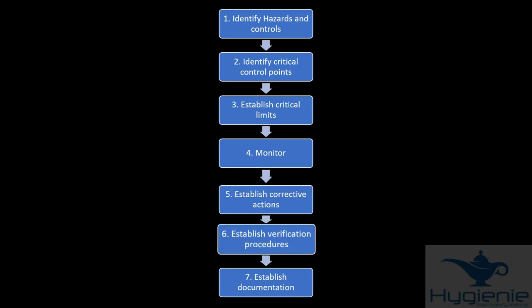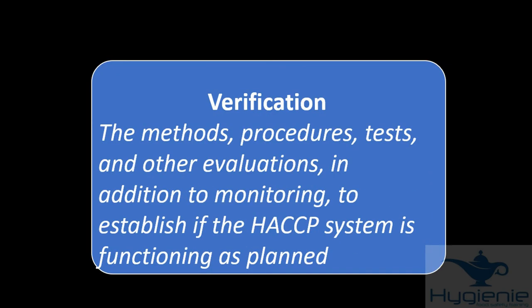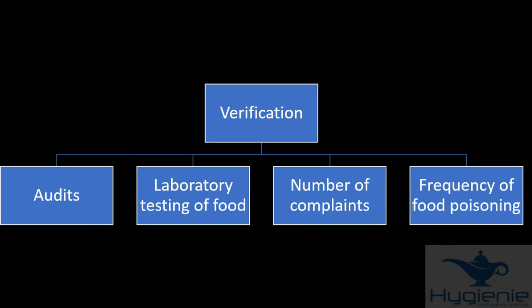Principle number six, establish verification procedures. How do we know the system is working? These are the methods, procedures, tests and other evaluations in addition to monitoring to establish if the HACCP system is functioning as planned. In other words, how do we know it's working? Examples include audits, laboratory testing of food, tracking number of complaints and tracking frequency of food poisoning.